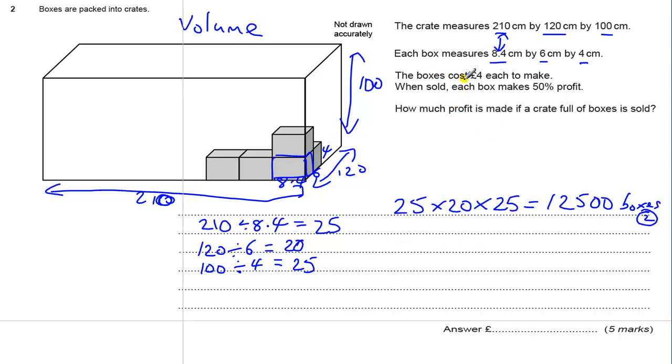Volume in a context. You've got boxes. The boxes cost £4 each to make. When sold, each box makes 50% profit. So 50% of £4 is going to be £2 profit. No calculator required there. It's a nice, easy calculation.